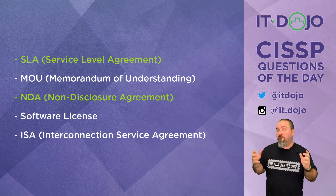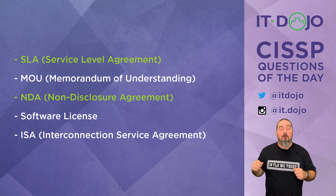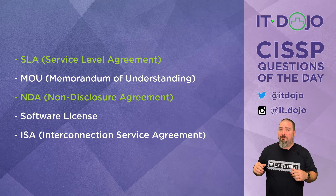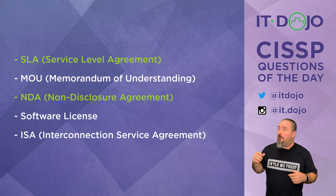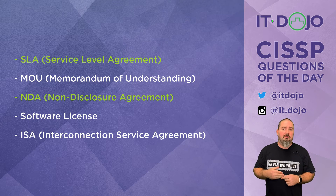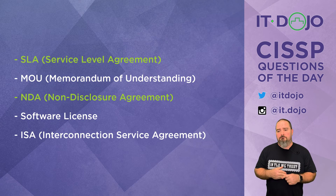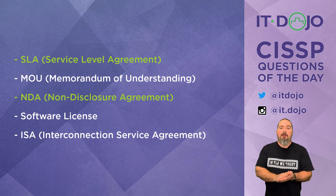An ISA tends to be much more technical than something like an MOU. In this case, I can dream up scenarios where it might apply, but that's where you have to be careful on the test — don't talk yourself into an answer. If you're sitting there trying to convince yourself it could be right, you've probably gone too far. Don't do that. Let's move on to question two.